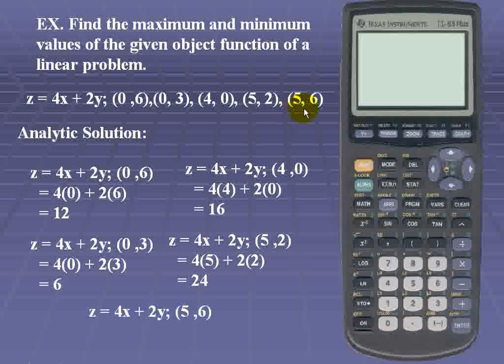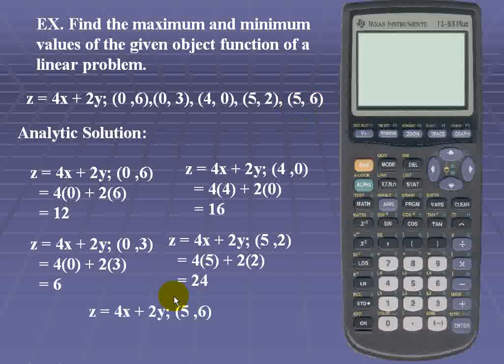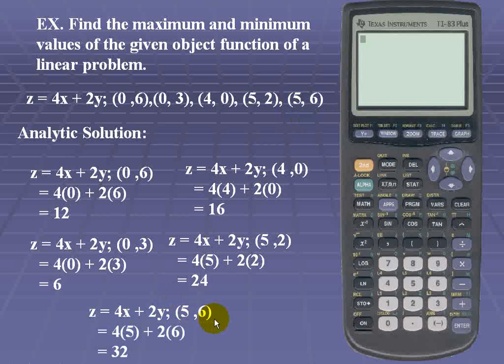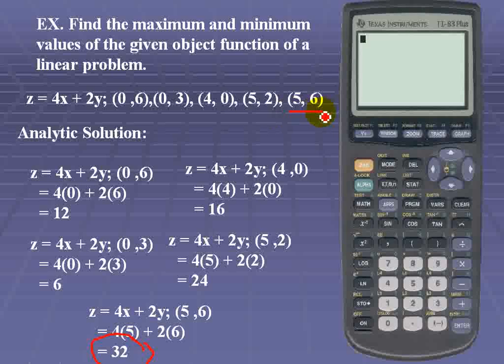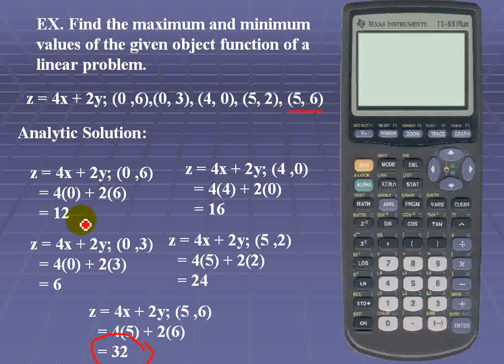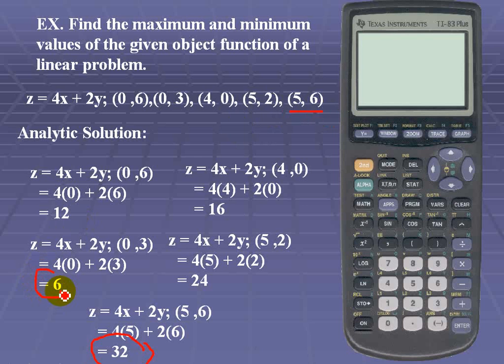And for our last ordered pair (5,6). x is 5, y is 6. It simplifies to 32. So if we compare all of the values, we see that we have a maximum value at 32, and that happens when our coordinates are (5,6). We have a minimum value at 6, and that happens when the coordinates are (0,3).